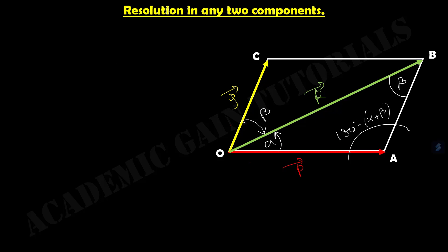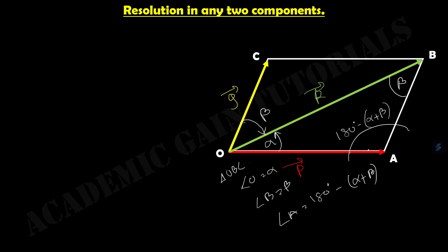This angle should be 180 degrees minus (alpha plus beta). We know that the sum of the three angles of a triangle is 180 degrees. So, as angle O equals alpha and angle B equals beta in triangle O, B, C, then angle A will be 180 degrees minus (alpha plus beta).